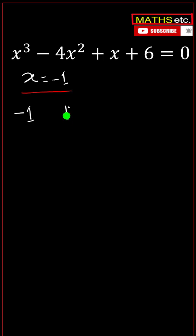We line up all the coefficients here in decreasing order. Coefficient of x cube is 1, coefficient of x square is minus 4, coefficient of x is 1, the constant term is 6. Draw this line. Take 1 as it is.